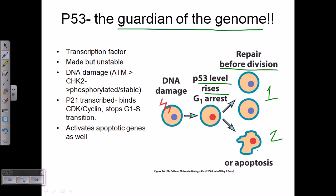None of the bad cells remain after P53 activation. That is why P53 is called the guardian of the genome — it never allows a bad cell to persist inside the body. P53 first tries to repair the damage, but if it cannot repair it, it kills those cells. So whatever cells remain are good and healthy — this is ensured by P53.